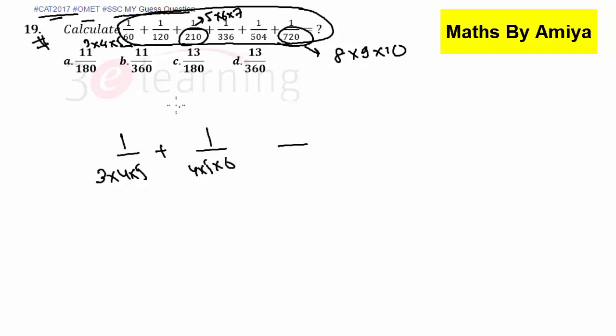And 120 is 4 into 5 into 6. That is 120. Yeah, it is 4 into 5 into 6 plus 1 upon 5 into 6 into 7 plus 1 upon 6 into 7 into 8 plus 1 upon 7 into 8 into 9 plus 1 upon 8 into 9 into 10. This is our sequence and series of this sort.